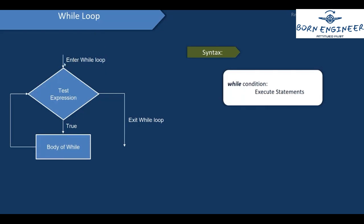First we will enter the loop and then we'll check the condition. If the condition is evaluated to true, then we'll execute whatever is present inside the body of the while loop and we'll go back. Again we'll check if the condition is evaluated to true — if it is true, we'll execute the body and head back. This process repeats until the test expression is evaluated to false, at which point we exit the while loop.